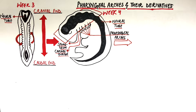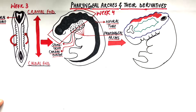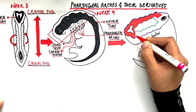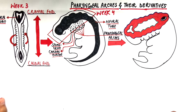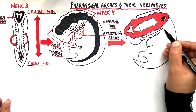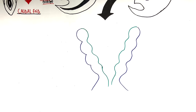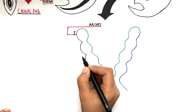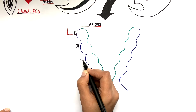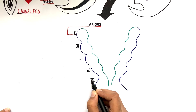If we make a cut at the embryo along the pharyngeal arches, this will be the inside view of the pharyngeal arches which are seen as pairs on the lateral sides of the embryo. Now, let's zoom in this area and look at the anatomy of these arches. These pharyngeal arches are named as arch number one, arch number two, three, four and six.